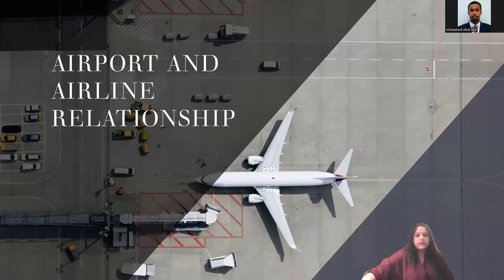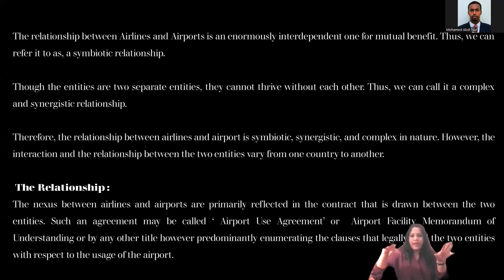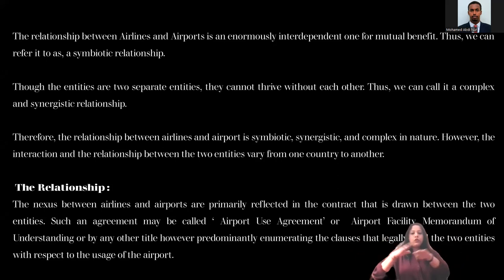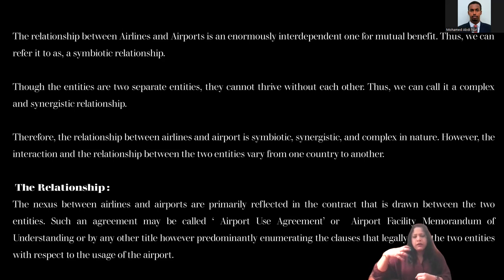The most important part of today's class is airport and airline relationship. Airports and airlines are two distinct entities — airports are the aerodromes and airlines deal with the carriers and aircraft. However, they are enormously interdependent for mutual benefit. We can refer to their relationship as a symbiotic relationship, where both parties benefit from each other. Though they are separate entities, they cannot survive without each other.